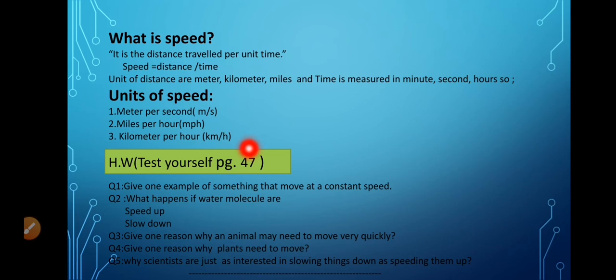Students, now you have to solve the test yourself of page number 47 on your need copies. Draw the margin line on both sides. Date, day, chapter number, chapter name and the page number of test yourself. Look at the questions. Question number 1: Give example of something that moves at constant speed. We have discussed many examples that move at constant speed. You can quote any one of your choice.